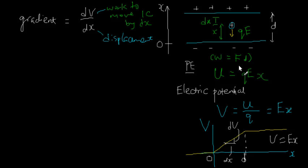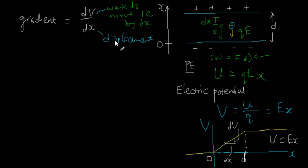If you think about the meaning of work done — work done is force times distance, where d is the displacement. So what is work divided by displacement? Work divided by displacement must be the force. If you divide both sides by d, we get the force.